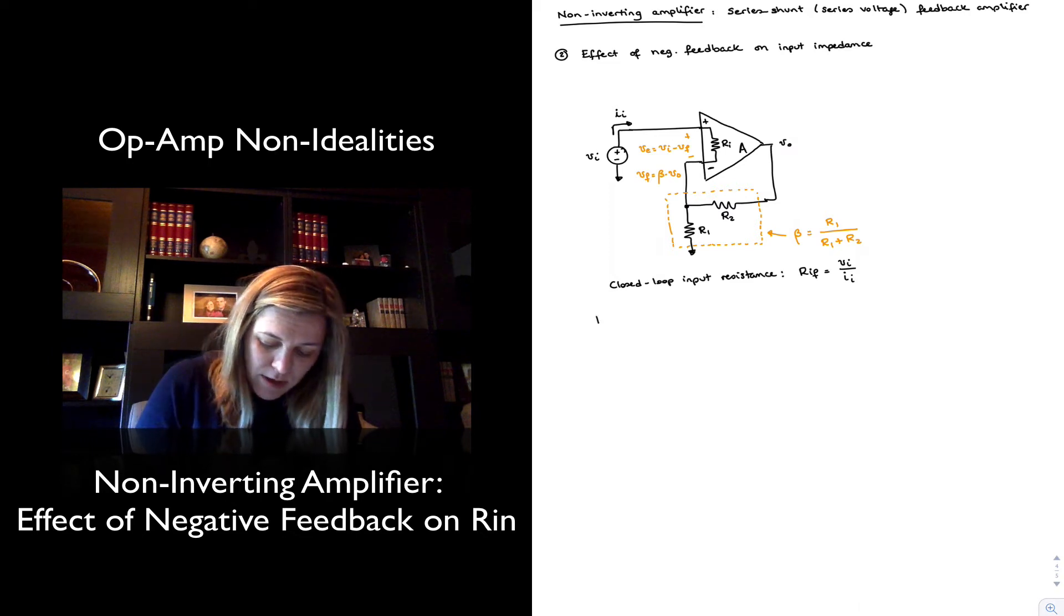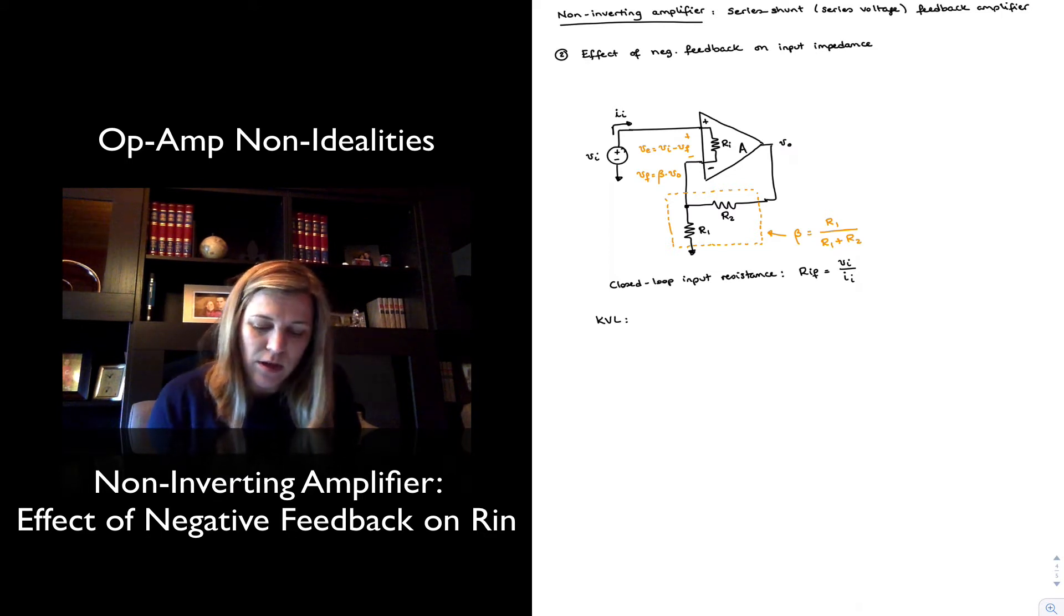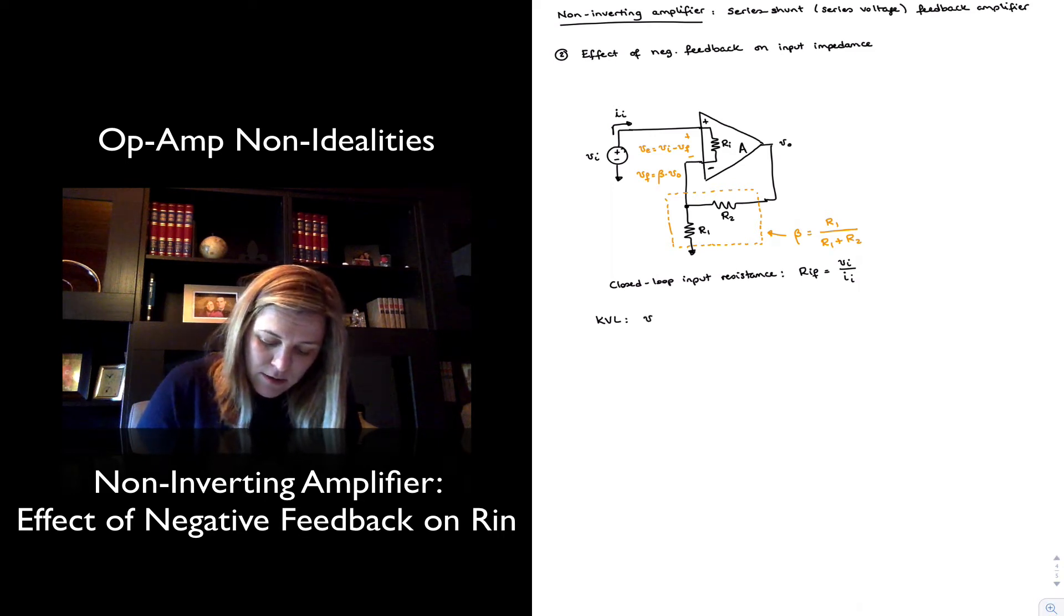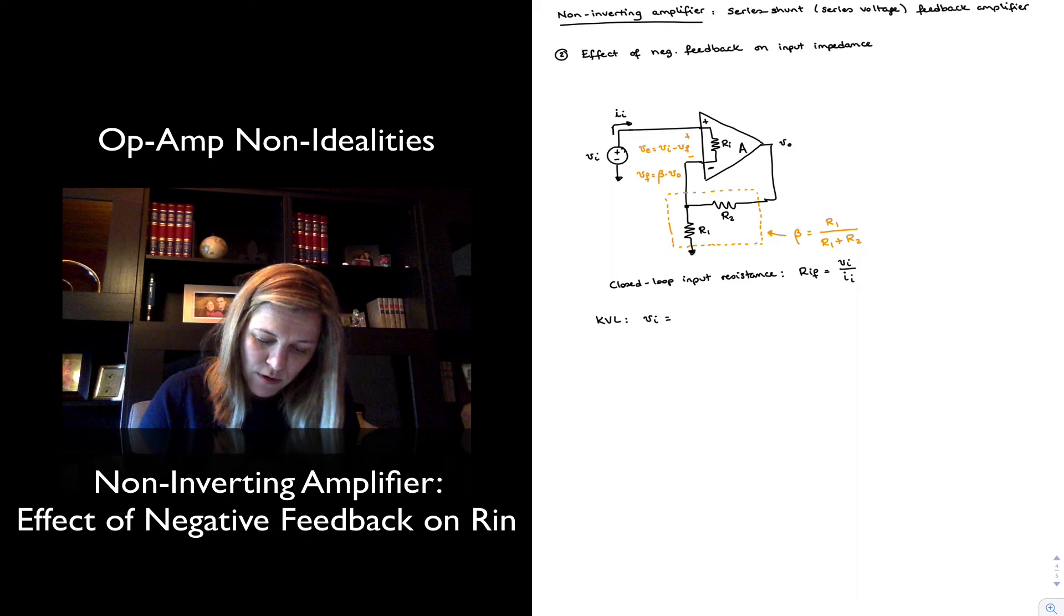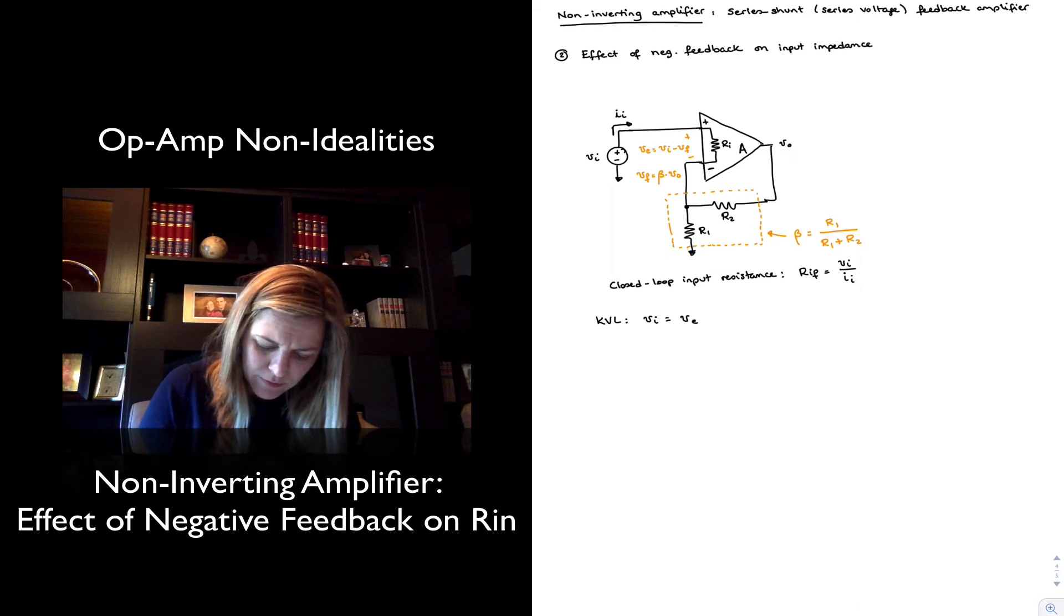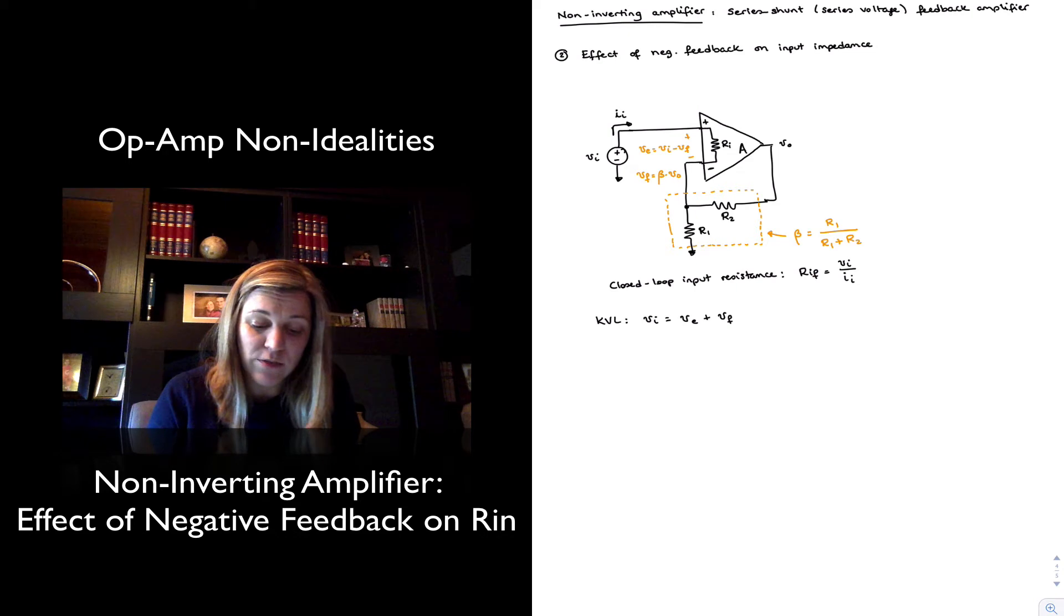And so I can apply initially my KVL to the loop that goes from vin all the way to ground. And I can see that vin, sum of voltage rises equals sum of voltage drops, so vin is equal to ve plus vf. And we can also see that ve is the difference between vin and vf.